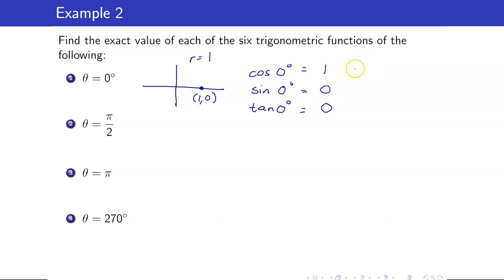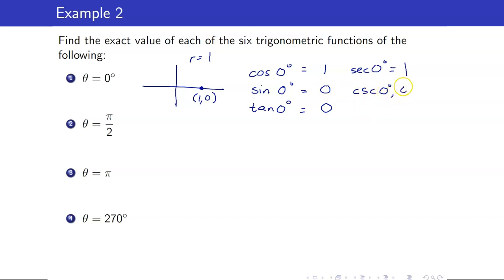The reciprocal of cosine is secant 0, which equals 1. Since sine 0 = 0, cosecant 0 is undefined, and cotangent 0 is also undefined because you would have a denominator of 0.